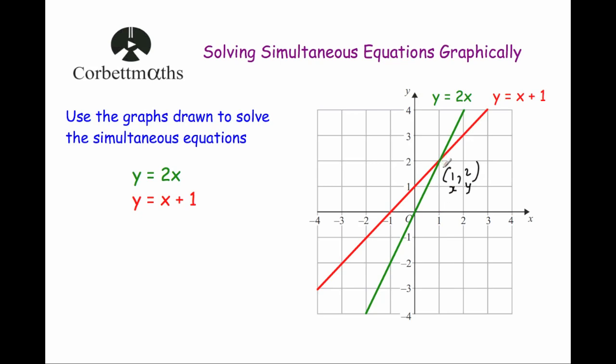Remember, it's along the corridor up the stairs. So we know that x will be equal to 1 and y will be equal to 2. And that's our solution, x equals 1 and y equals 2.